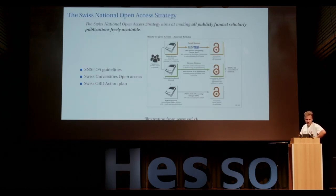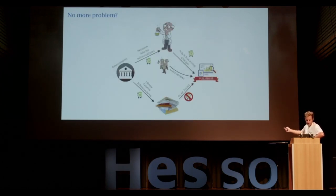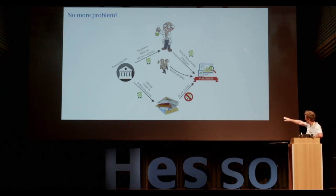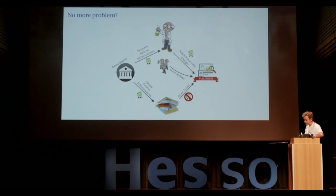Looking at the Swiss national open access strategy, we have the gold road and the green road — I'll go fast since we've seen this in several talks. But I want to stress that just because we have the gold open access model doesn't mean we have no problems. You can see some other cash flows, simplified, for the publishing system. By removing the subscription cost from librarians, it doesn't mean there's no problem anymore.